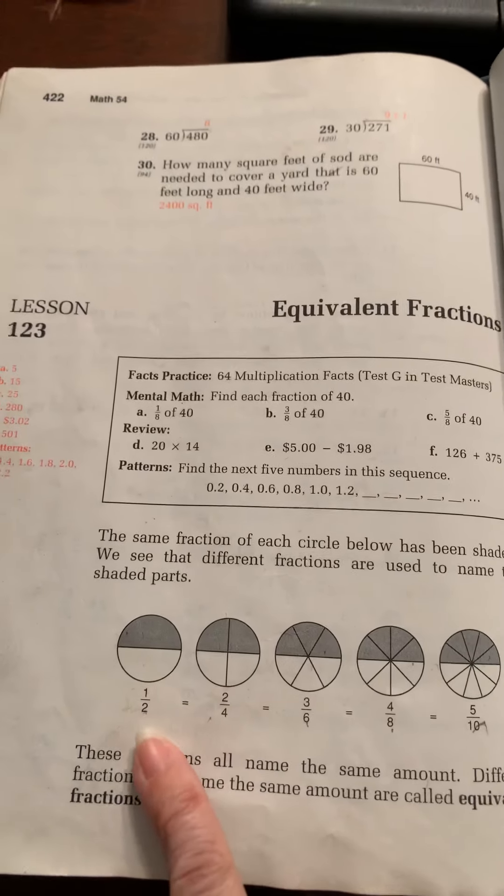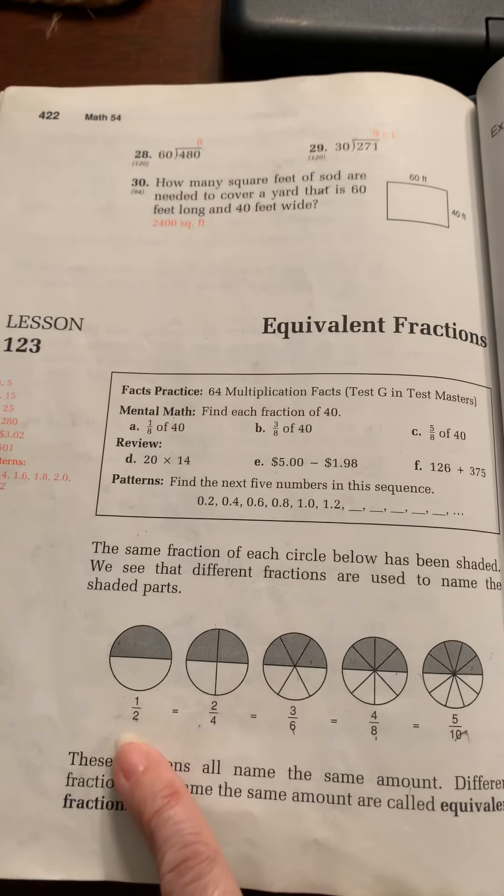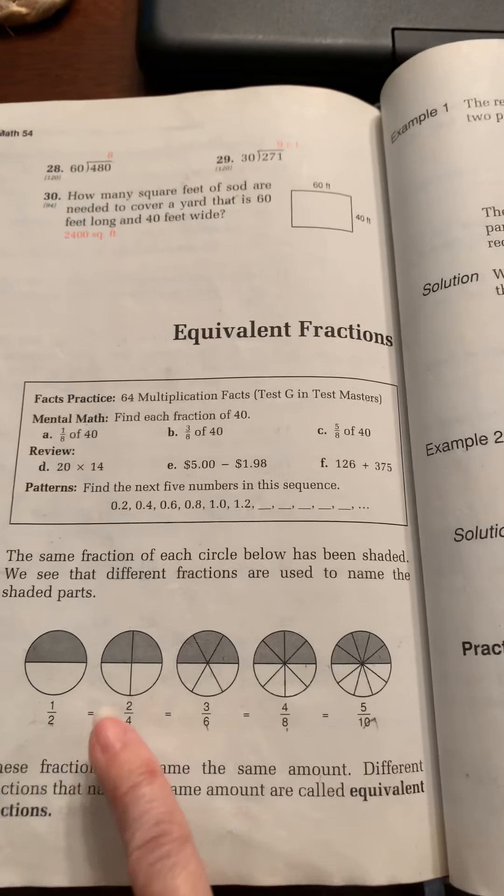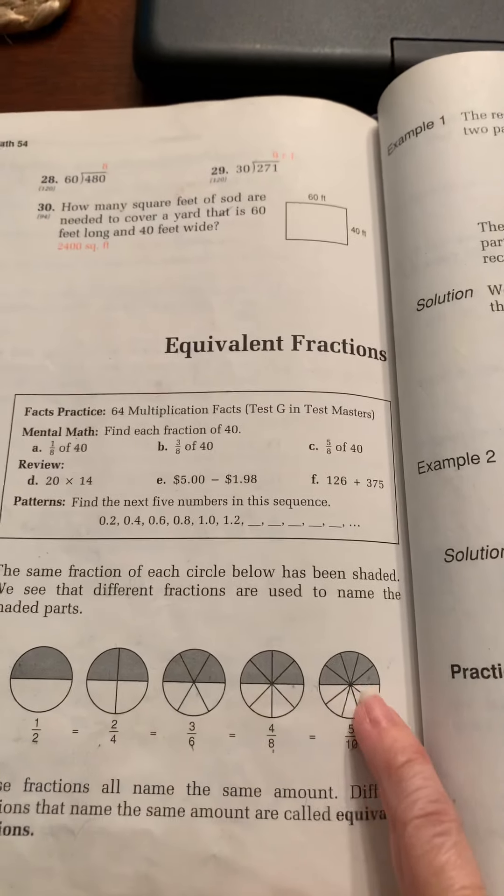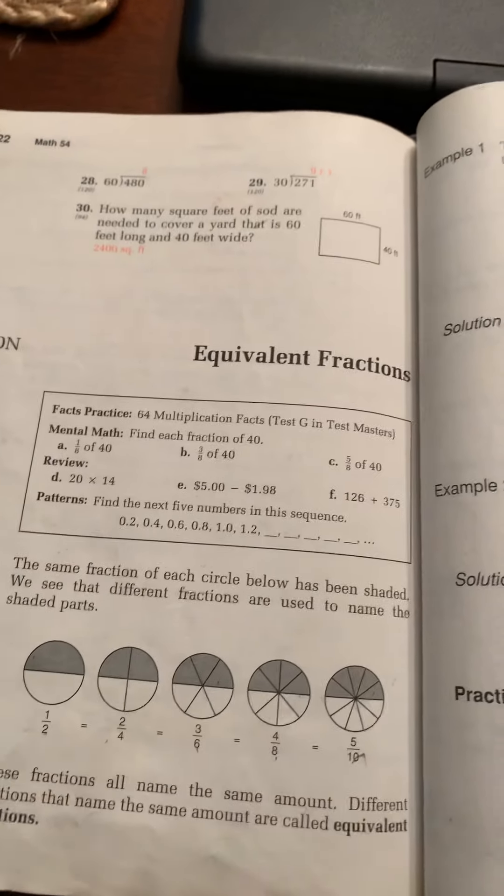Here are equivalent fractions for one-half: one-half, two-fourths, three-sixths, four-eighths, and five-tenths. And you see as they add more lines, it just breaks it into more pieces, but these are equivalent fractions.